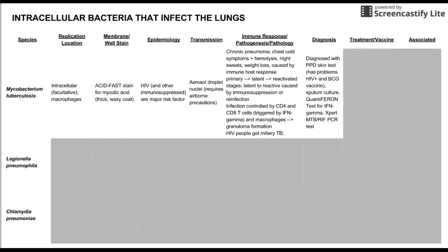Tuberculosis is usually diagnosed with a PPD skin test, which tests the type 4 hypersensitivity reaction of tuberculosis. The skin test is not perfect — people who are HIV-positive might get a false result because they are immunosuppressed and not able to mount the immune response that would make the PPD skin test positive. Additionally, people who have had the BCG vaccine also get false responses on the PPD skin test.